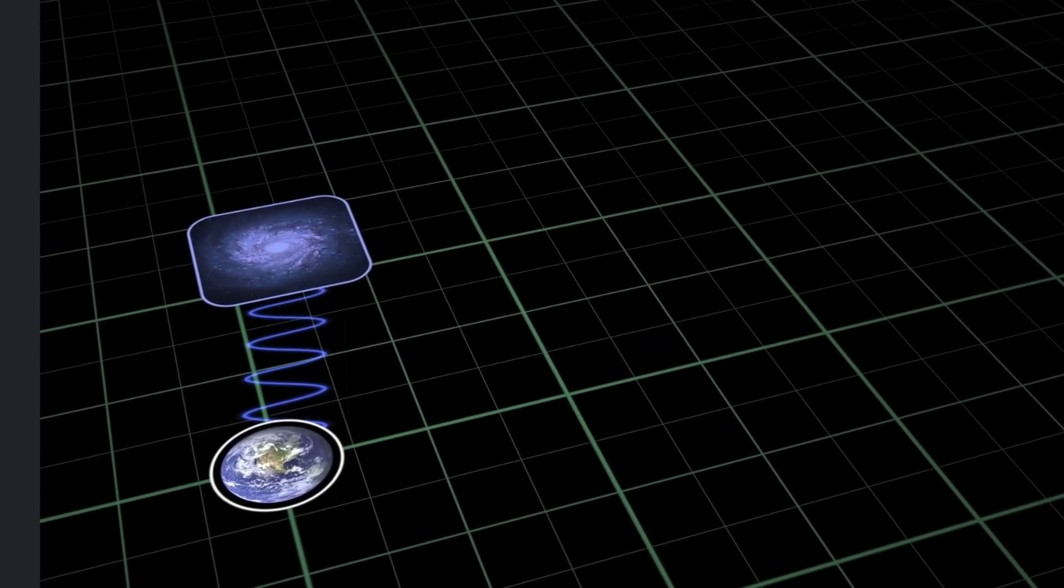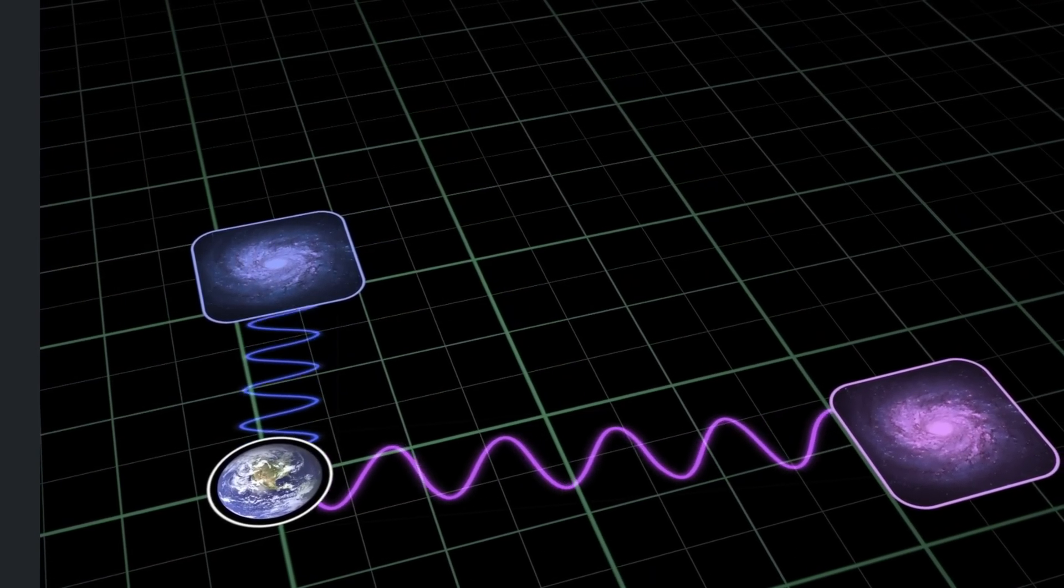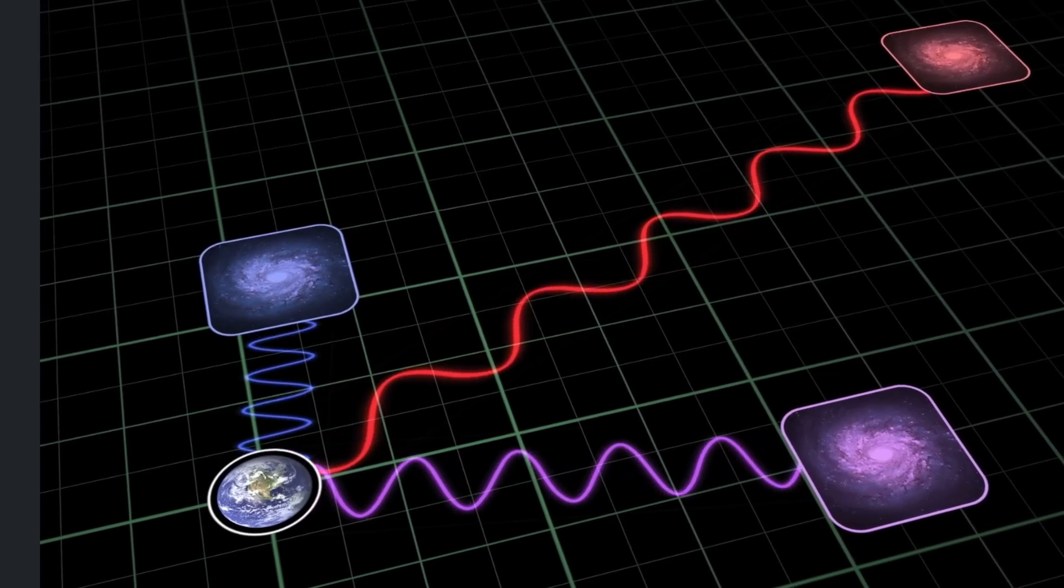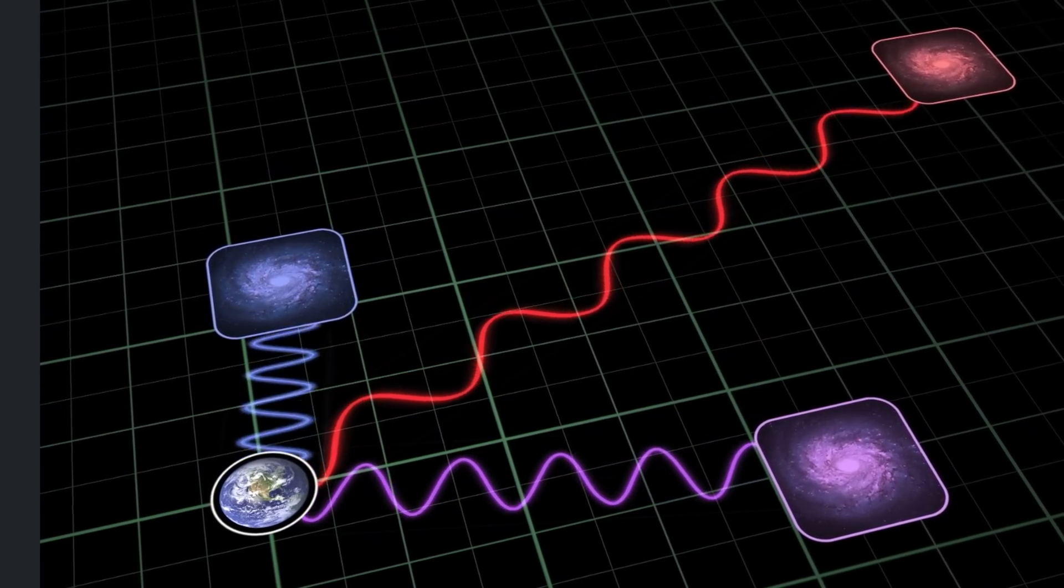The way to resolve this and the way to see if this is actually correct is by of course observing even more galaxies. Here we're not just talking about thousands - we would have to probably look at millions in order to see if this redshift anomaly still stands. If by looking at millions of galaxies we still discover the same, well then maybe there is something going on.